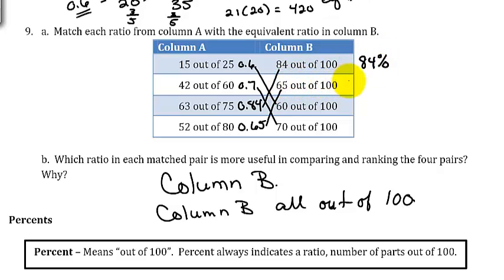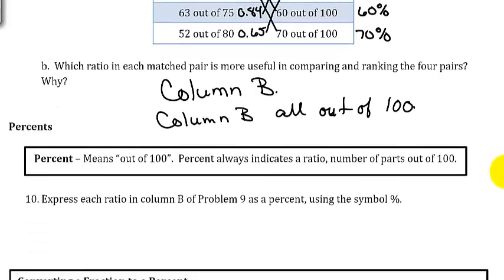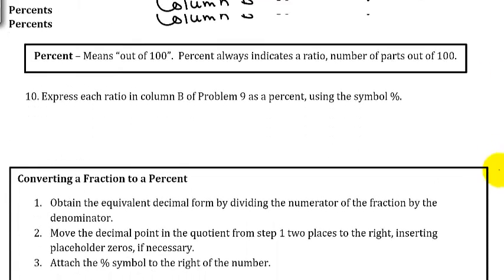This is 65 out of 100, so this is 65%. Then 60 out of 100 would be 60%, and 70 out of 100 would be 70%. That is problem number 10.